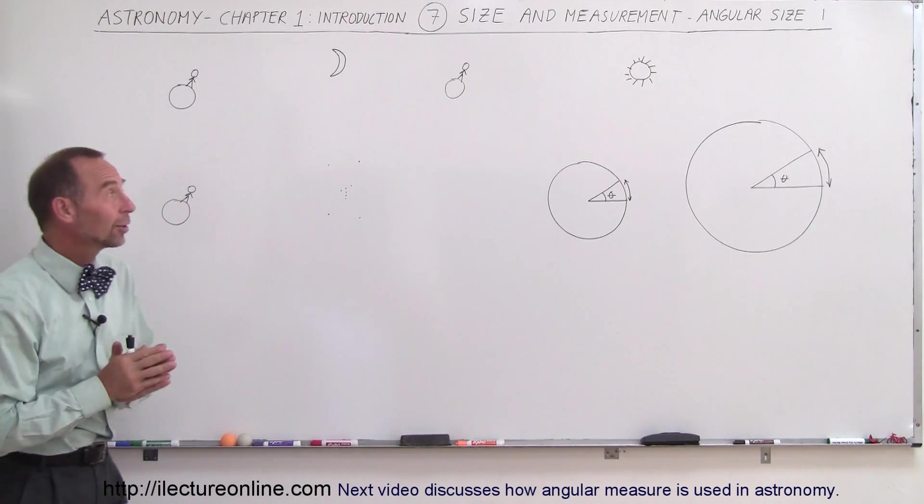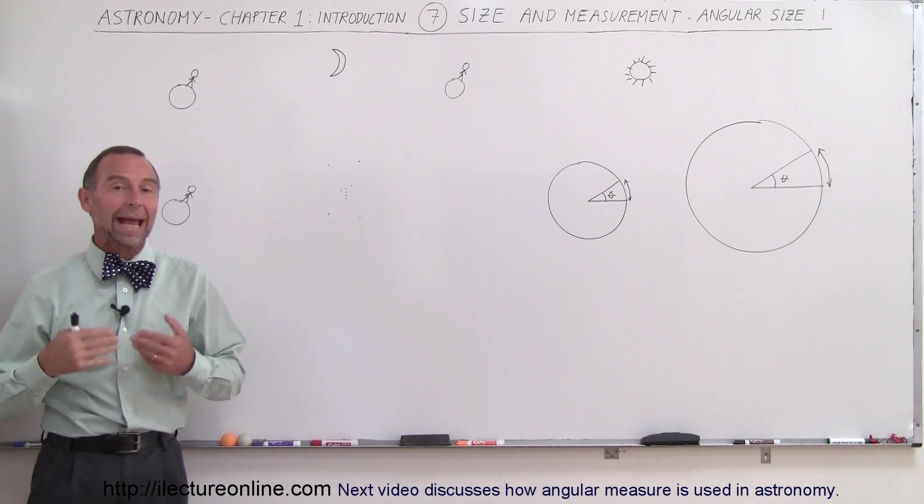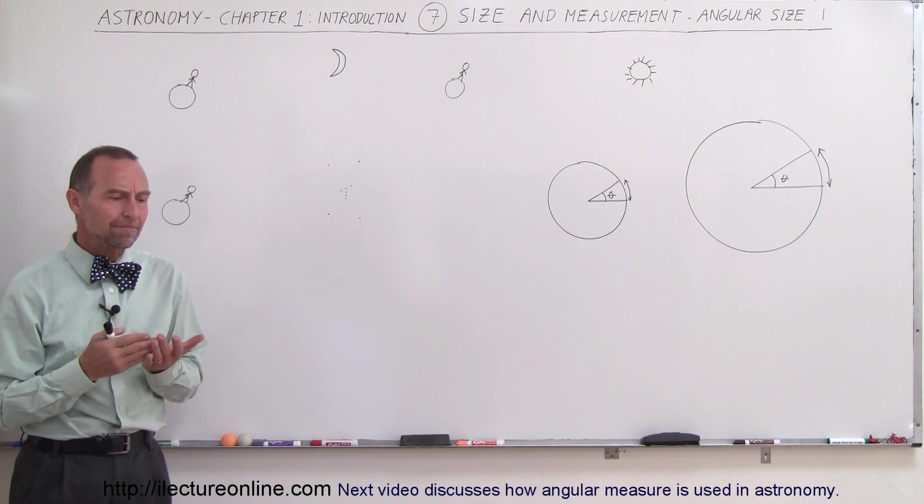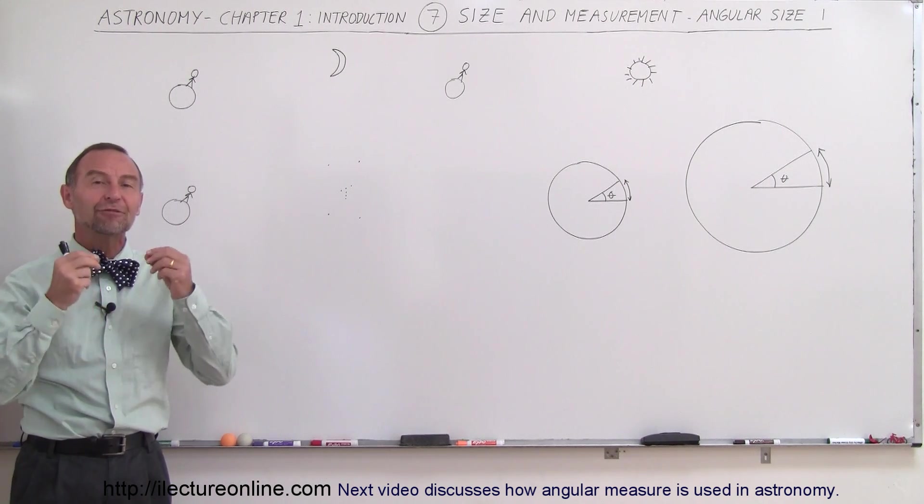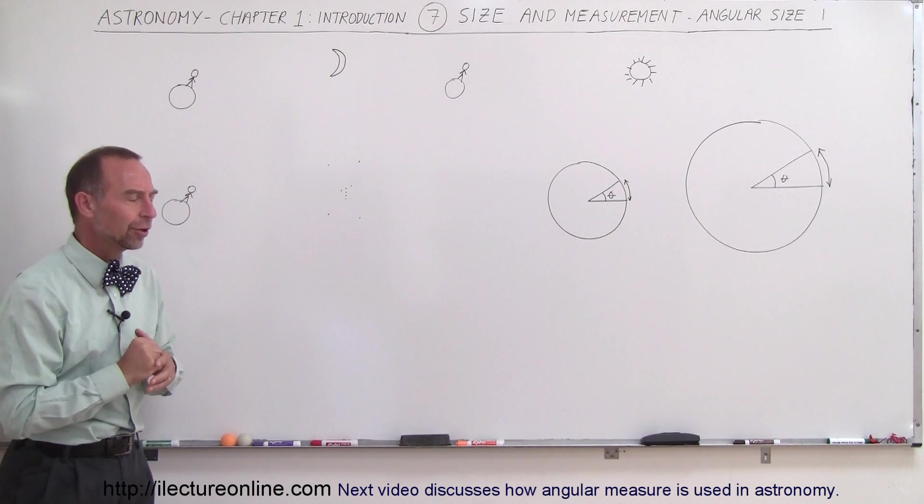Welcome to ElectronLine and now we're going to take a look at angular measure or angular size. In astronomy it is very difficult to figure out how far things are and we'll talk a lot about that in our future videos.